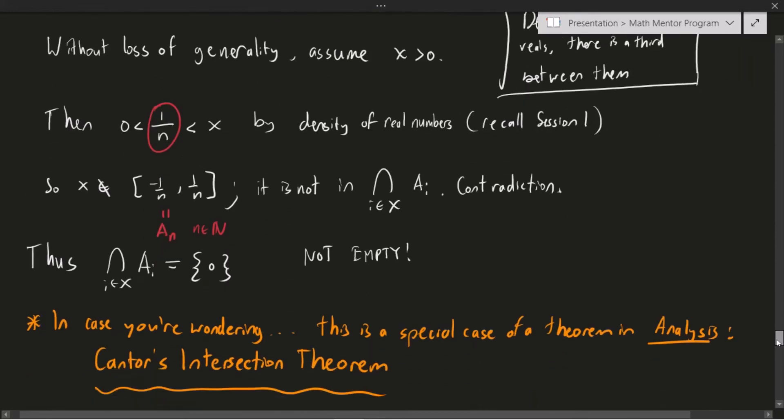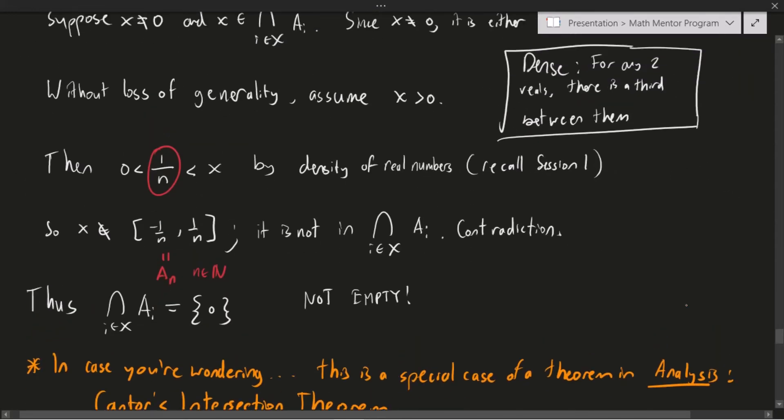So here, our intersection we've proven is just the set containing zero. And I want to draw to your attention that this is not the empty set. Okay. And people will often mistake this because they'll say, Oh, it has a zero. So it must be empty. No, this set contains one element. And that one element is zero. Okay. Zero is not nothing. Nothing is literally nothing. Zero is not nothing.